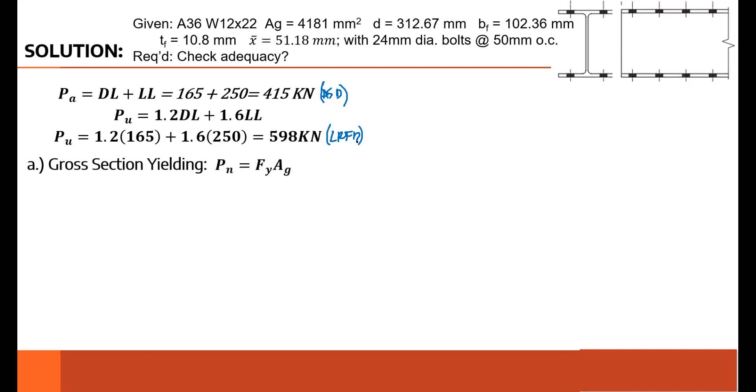To check the adequacy, these loads should be less than their strength - the allowable strength and design strength. Since this is a tension member, the first limit state is gross section yielding (GSY): PN = FY × AG. FY is given as A36, so 248. AG is given in the properties. I solved for the nominal PN, multiplied by φ for LRFD, and got the design strength of 933. The design strength is 933, the load is only 598. Safe, it passes.